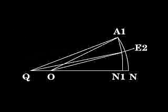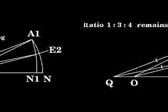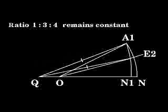Choose any point E2 on arc A1N1. Connect QE2 and OE2. Let angle E2 ON equal Z degrees. Then angle QE2 O is 1 quarter Z degrees. Angle E2 QN is 3 quarter Z degrees. The ratio is 1 to 3 to 4. As E2 moves between A1 and N1, the ratio of 1 to 3 to 4 remains constant.